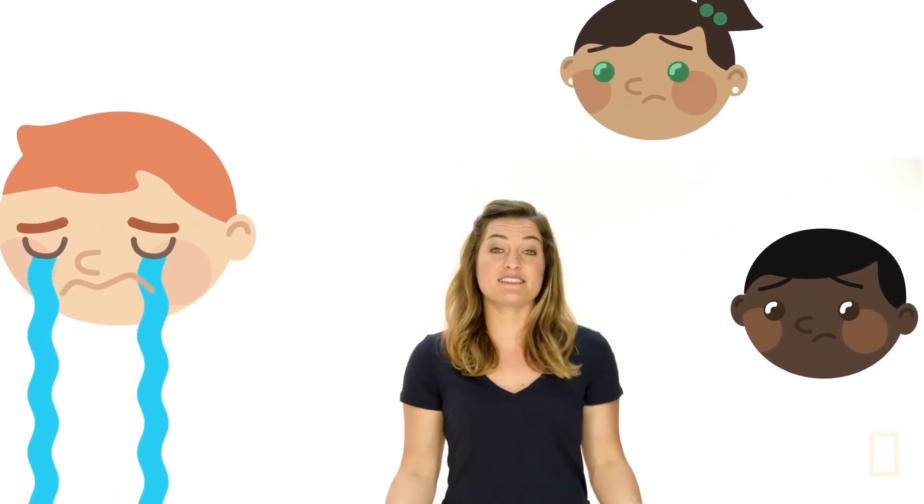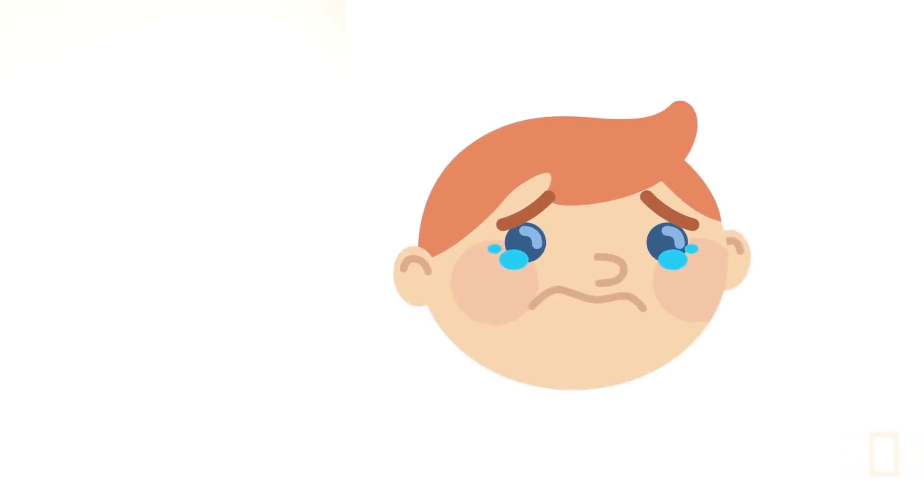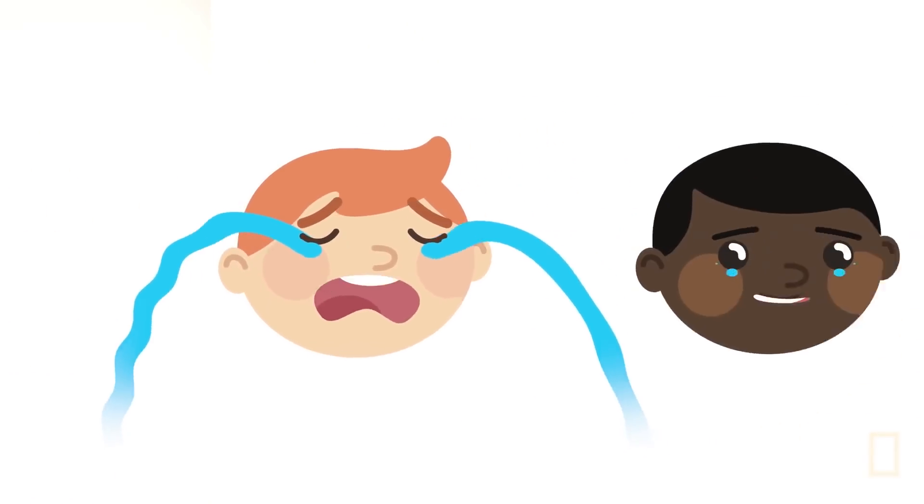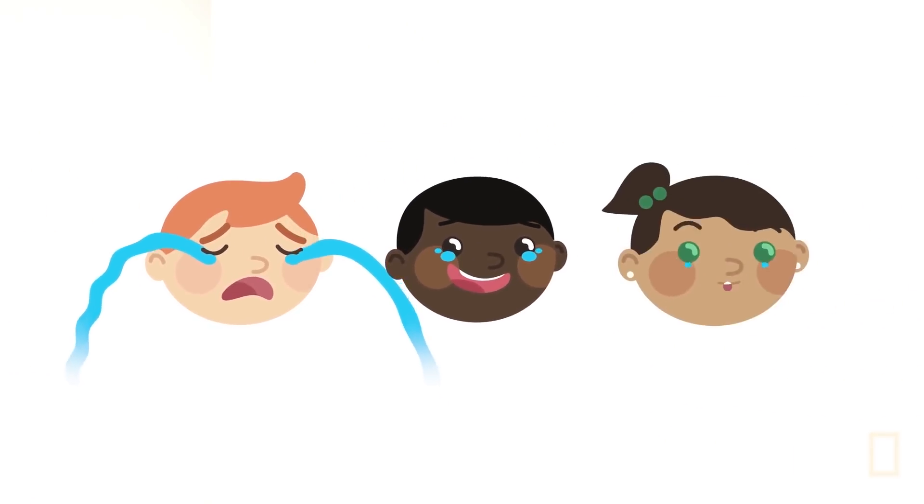When we get overwhelmed emotionally, we cry, which sends signals to other humans that we need some help coping. This makes sense, since we cry when we feel really extreme levels of emotion like sadness or joy, rage, and surprise.